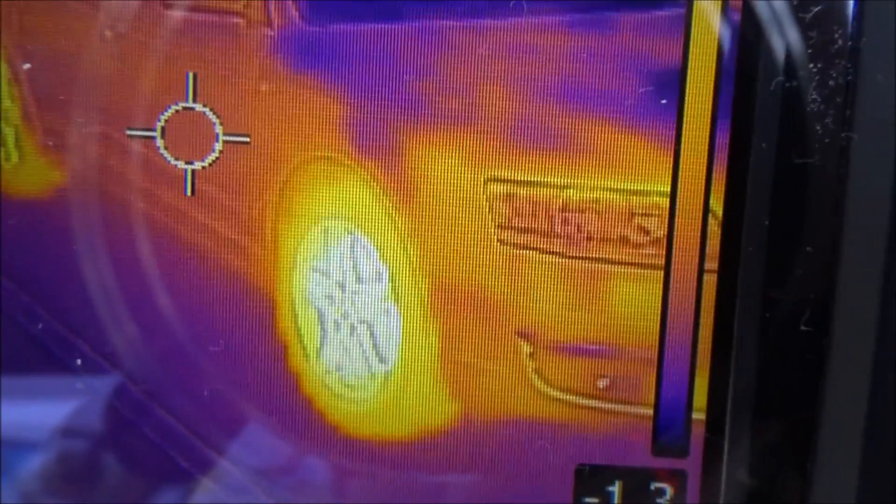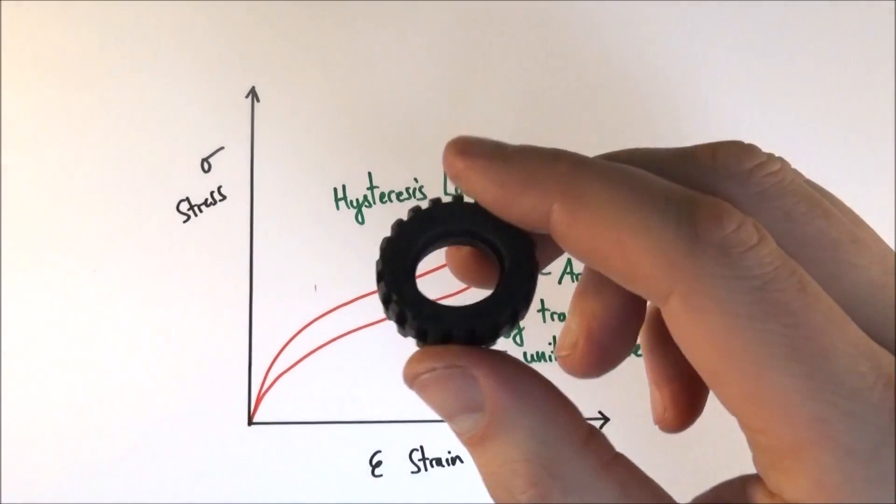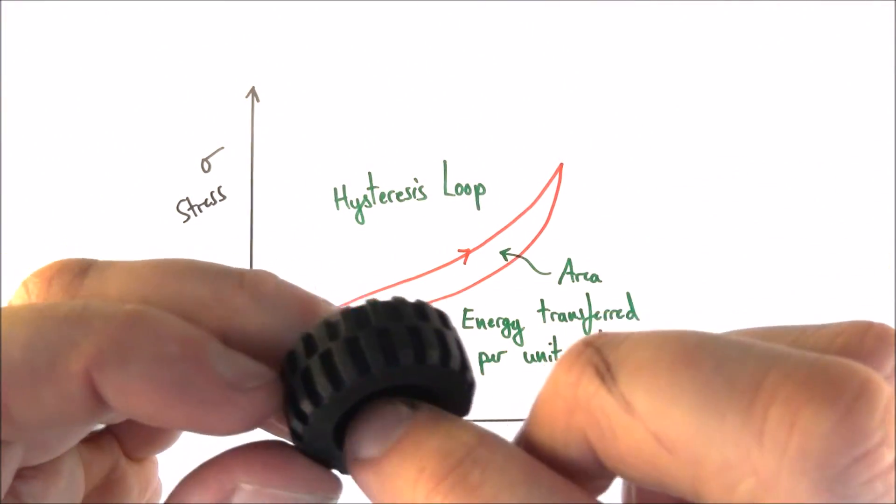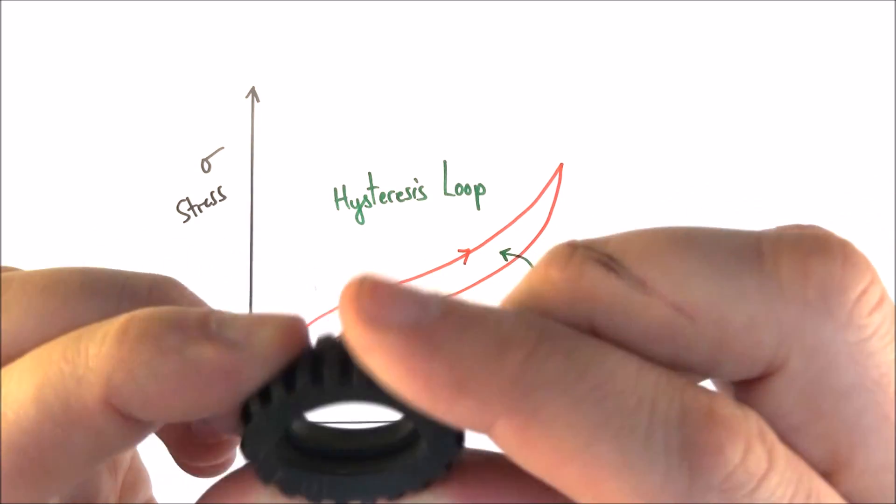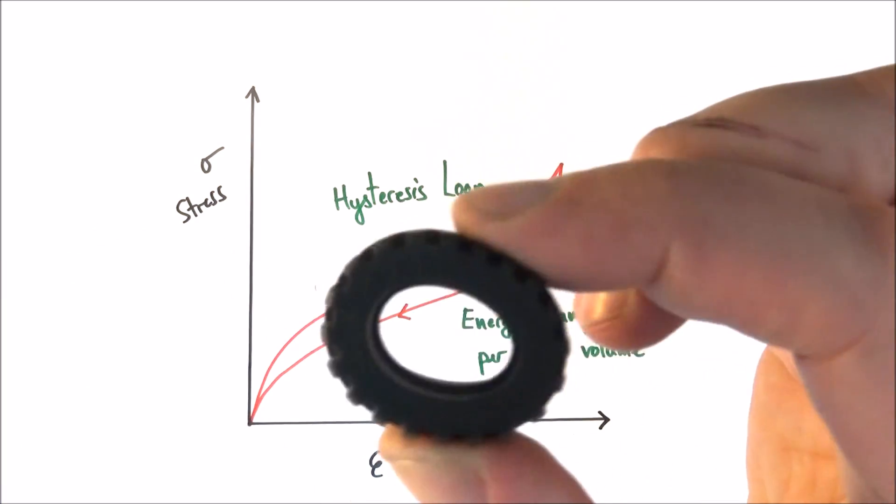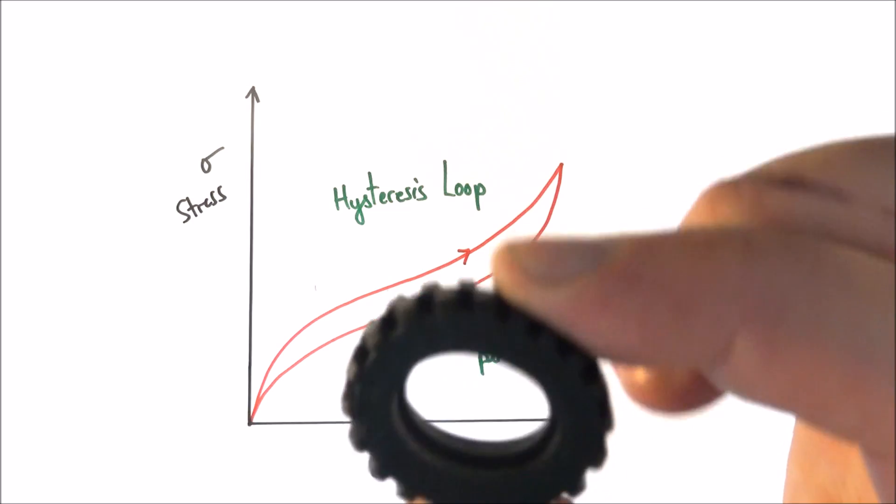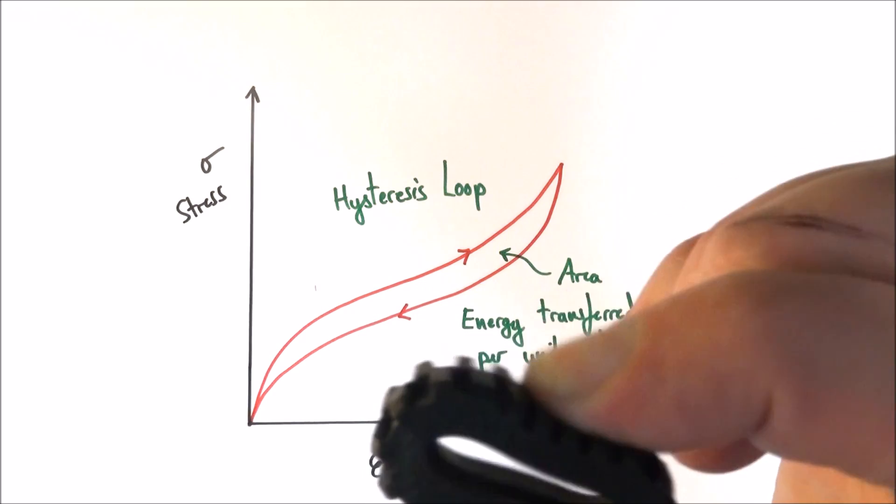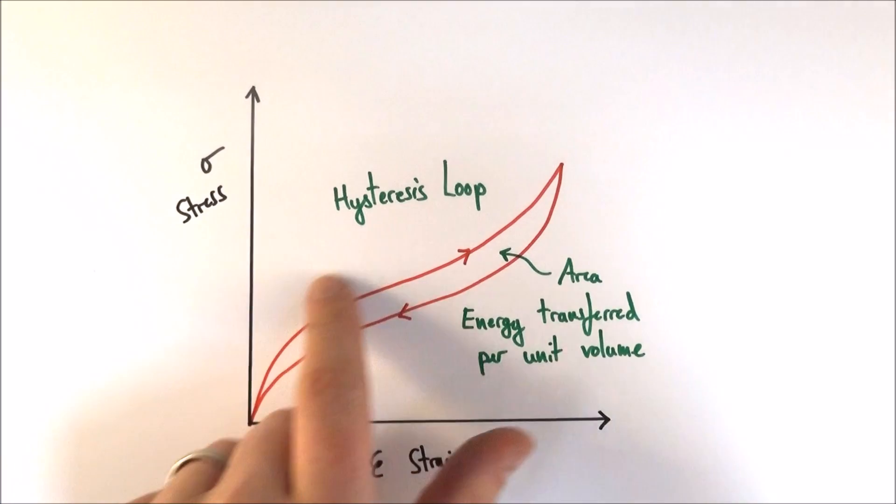So if we think about what the car tire is actually doing as the car's driving along, the bottom is being compressed and extended many times as it's rotating. So what effectively is happening is that the car tire is being stretched and compressed, stretching, compressed many many times per second.